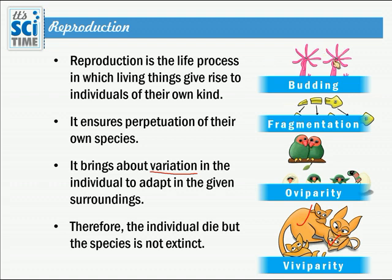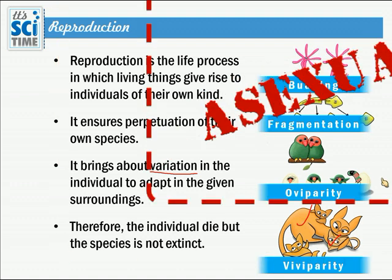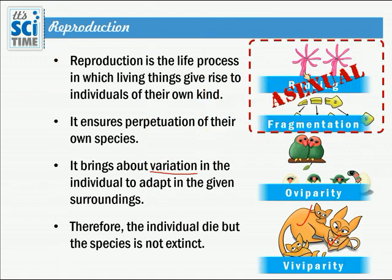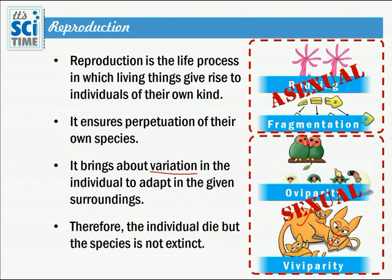These four reproductive methods can be divided into two groups. The first two methods involve only one parent — we call them asexual reproductive methods. In the other methods, two organisms participate — a male and a female — and this type is called sexual reproduction.